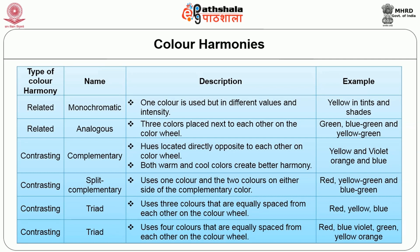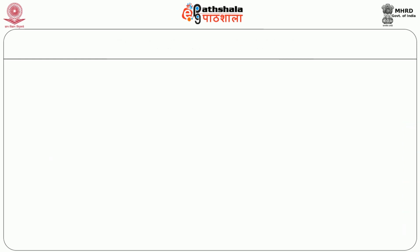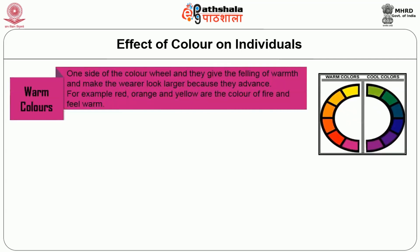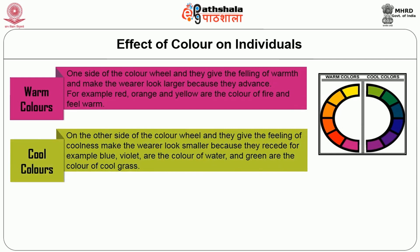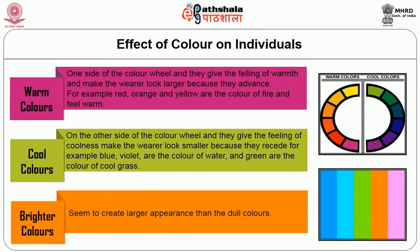The effect of color on individuals is an important aspect for a fashion designer to learn about. Warm colors are on one side of the color wheel and they give the feeling of warmth and make the wearer look larger because they advance. Warm colors namely red, orange and yellow make the wearer look larger and they advance. Cool colors such as blue, violet and green are the colors of water. They make the wearer look smaller and they tend to recede. Bright colors on the other hand create a larger appearance than dull colors.